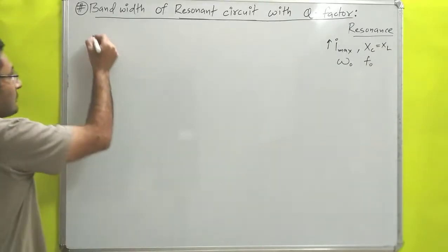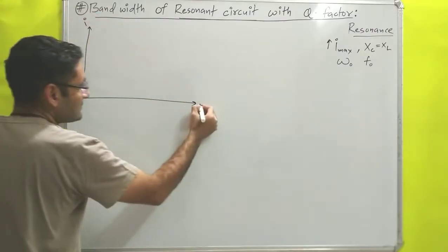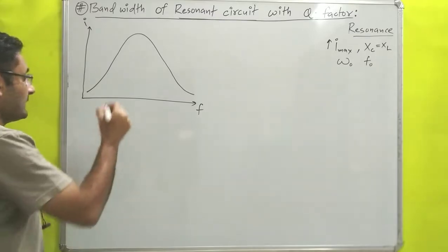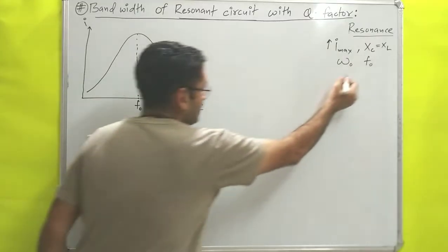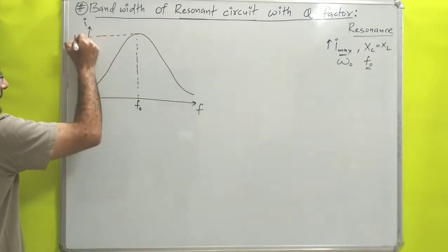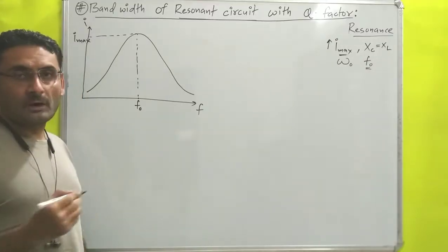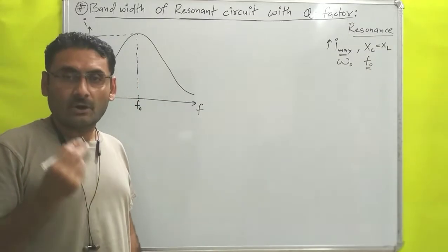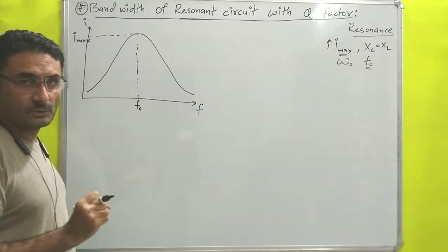After that we drew a diagram of current versus frequency. At one frequency, known as the resonant frequency, the flow of current is maximum — that is where resonance takes place. We also discussed the role of resistance R: R controls the resonance, or increases or decreases the sharpness of the curve.